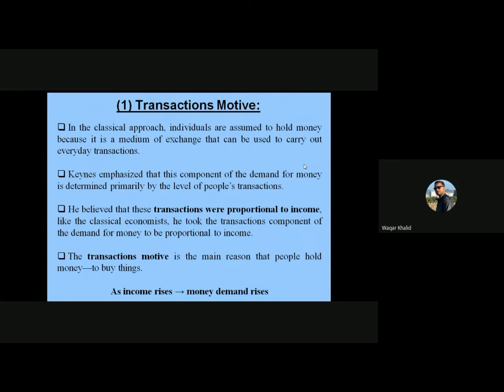If you have more income, you will go to the market to buy more things. Keynes took the transactions component of money demand to be proportional to income — if you have more income you will make more purchases, and if you have less income you will make fewer purchases. So the transactions motive is the main reason people hold money.